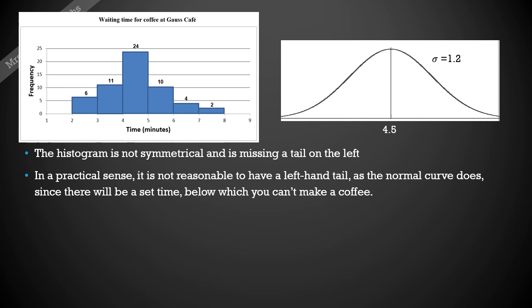In a practical sense, it's also not reasonable to have a left-hand tail if you think about what we're measuring and the time it takes to make a cup of coffee. It won't be possible to make any cups of coffee in less than at least a bit of time. So maybe that two minutes is the limit of how quick you could make a cup of coffee. It might not even be possible to make a cup of coffee in 30 seconds or a minute and a half.